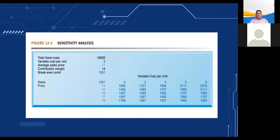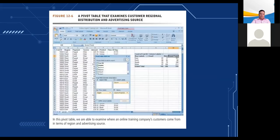A pivot table displays the result of a sensitivity analysis examining the effect of changing the sale price of a necktie and the cost per unit on the product's break-even point — answering the question: what happens to the break-even point if the sale price and cost per unit increase or decrease? Another pivot table examines customer regional distribution and advertising source, allowing us to see where an online training company's customers come from in terms of region and advertising source.